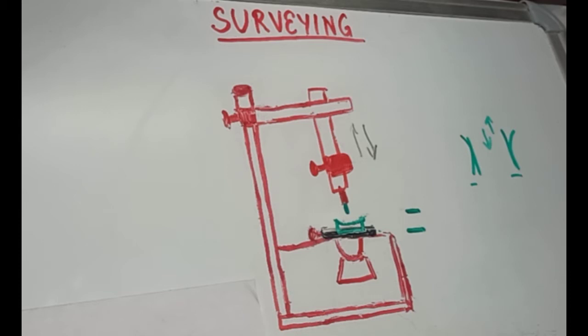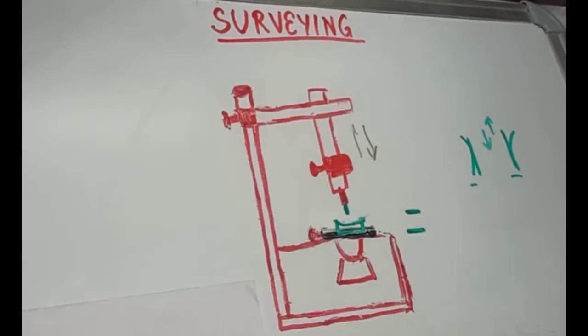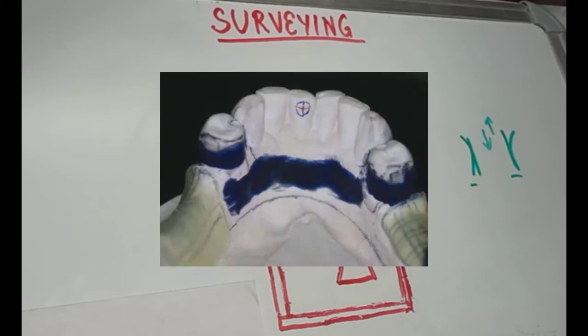Now, how will we create this depression? This can be done either through enameloplasty or by recontouring the tooth with a crown. And any other undesirable undercuts should be blocked out to avoid interferences using wax or block out material.